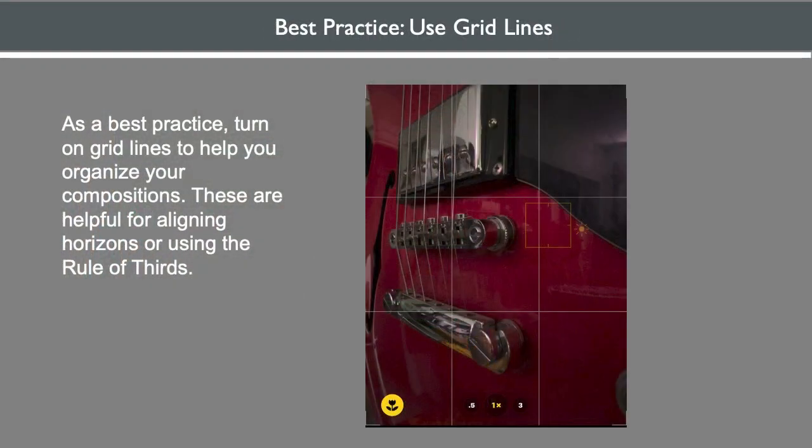As a best practice, turn on grid lines to help organize your compositions. These are helpful for aligning horizons or using the rule of thirds. On DSLRs, you can do this in the menu. On smartphones, these are found in your camera settings.